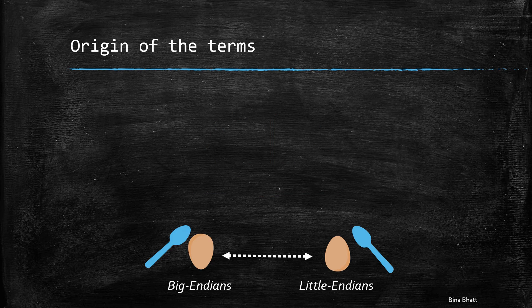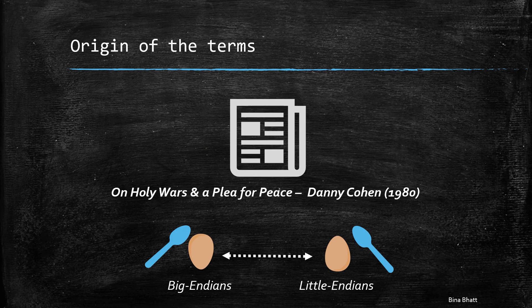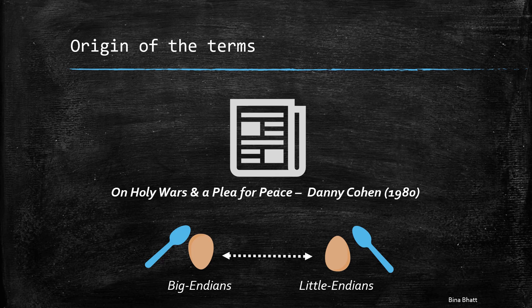But from there, these words found their way in an article titled On Holy Wars and a Plea for Peace, which was written by computer scientist Danny Cohen in 1980. And that's how these terms were introduced in the world of computer architecture.